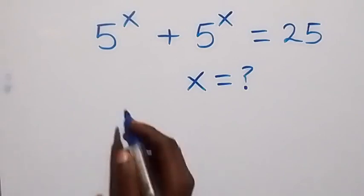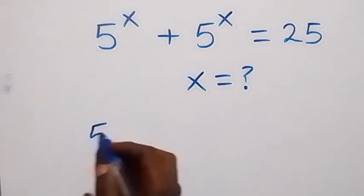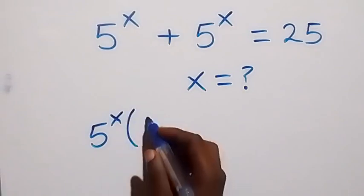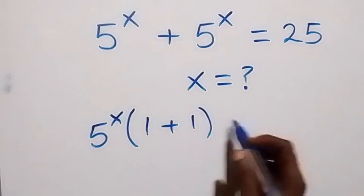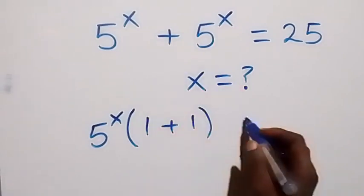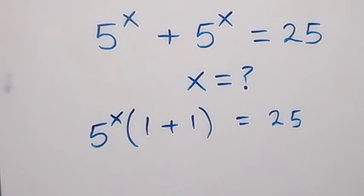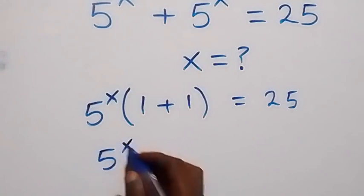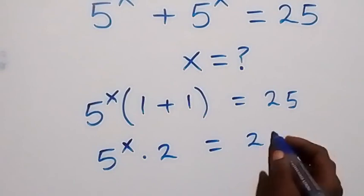From what we have here, we factor 5 raised to power x out. Then we have 5 raised to power x into bracket 1 plus 1, which equals 25. Then 1 plus 1 is 2, so we have 5 raised to power x times 2 equals 25.